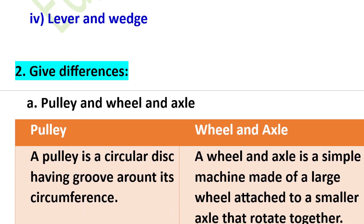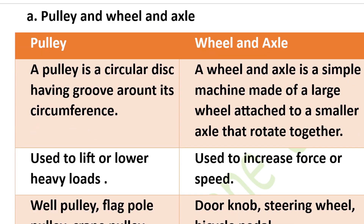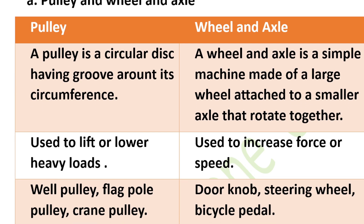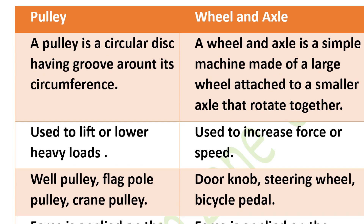Now we have the difference between pulley and wheel and axle. A pulley is a circular disc having a groove around its circumference. A wheel and axle is a simple machine made up of a large wheel attached to a smaller axle that rotates together. A pulley is used to lift or lower heavy loads, while a wheel and axle is used to increase force or speed.